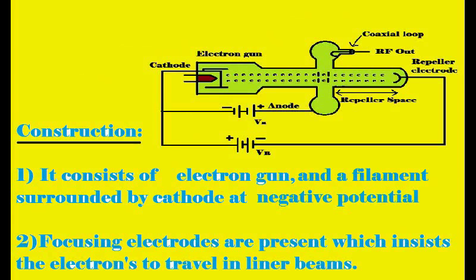The reflex klystron consists of an electron gun with a filament surrounded by a cathode, which is at negative potential. Focusing electrodes are present which do not allow the electron beam to disperse in random directions, insisting the electrons travel in linear beams.